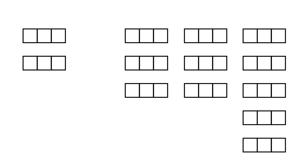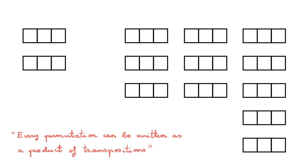Now that we know about permutations and transpositions, we come to a very important observation: every permutation operator can be written as a product of transposition operators. I will use the permutation P312, which corresponds to n equals 3, as an example. Note that P312 is itself not a transposition, because it affects all three elements. Using the view of moving the balls with boxes fixed in order 1, 2, 3, starting with red, green, blue: applying P312 moves the red ball to box 3, the green ball to box 1, and the blue ball to box 2. I can reach the same answer by first applying P321, which is a transposition exchanging 1 and 3, and then applying P213, which exchanges 1 and 2. This gives the same final configuration, so we can write P312 as the product of these two transpositions.